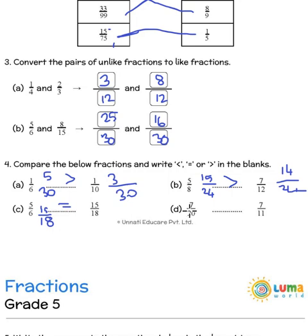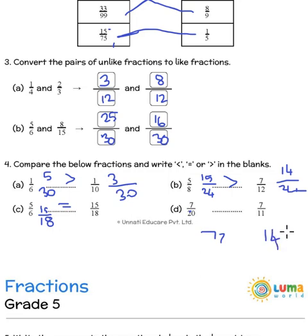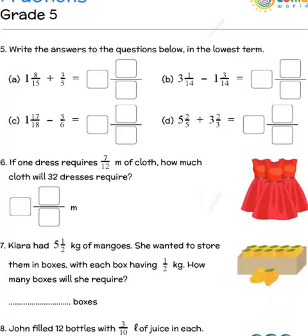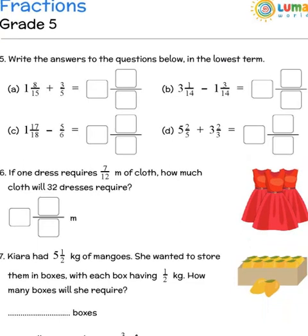If you want to try the other method too, you can. For example, 7 into 11 — cross multiply — is 77. 20 multiplied by 7 is 140. So 77 is less than 140. That is the other method. Just to give you an understanding of both the methods.